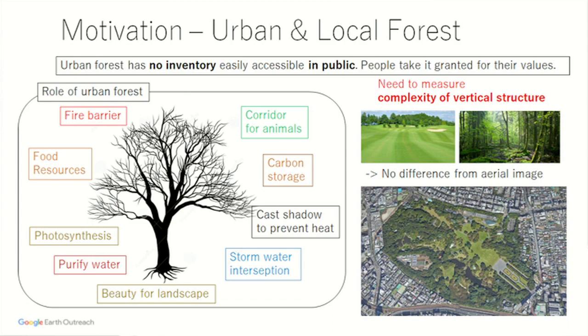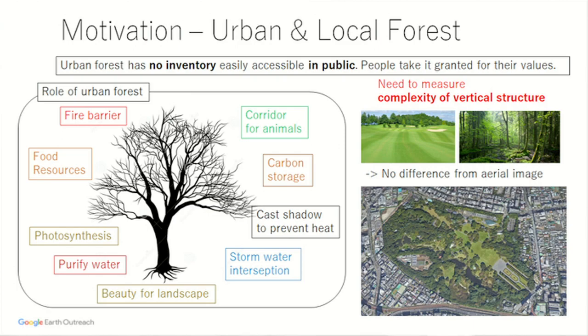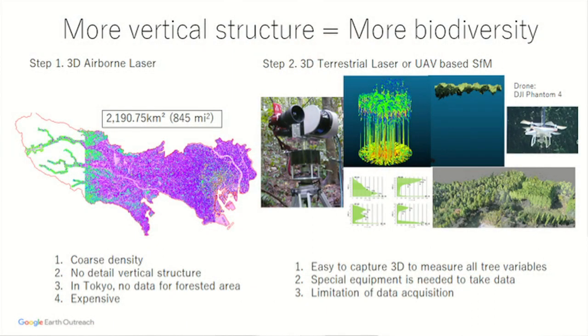I want to talk about urban forest and local forest. When you work in developing countries, that's fine, but you also need to care about local forest. Trees have many ecological values, but it's hard to monitor because when you look at two-dimensional photos, grassland and forest are the same green — no difference. That means the same ecological value. If you don't distinguish between them, they have the same value. What we need is to measure the vertical direction — we need 3D.